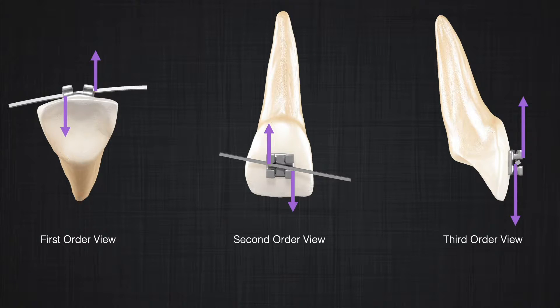However, we only talked about the third-order view movement last time. Do we have the same relationship when talking about the first-order and second-order views? We can produce a couple in all three dimensions. In the third-order view we can produce that with a rectangular wire, but in the first and second-order views we can produce that with round or rectangular wire. In the third-order view, we cannot produce a couple with a round wire.